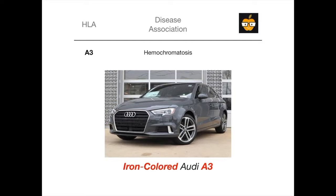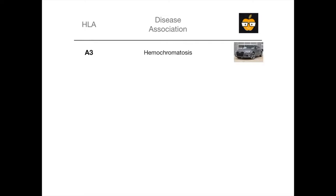You just got a free point. HLA A3 — you're going to be taking your test and they're asking you about HLA A3. How do I remember what this is associated with? A3, I'm thinking of the Audi A3, one of the sexiest cars alive. And it was in the iron color in the dirty USMLE video. So it's hemochromatosis. Bam. Free point.